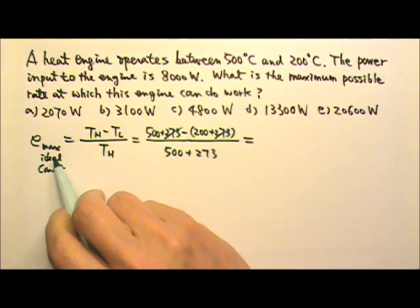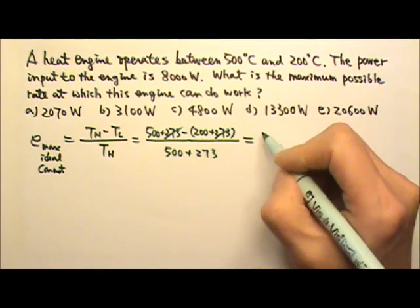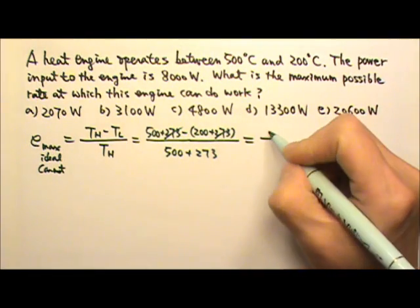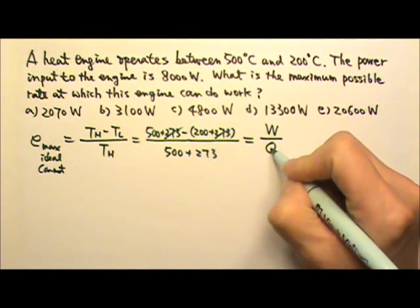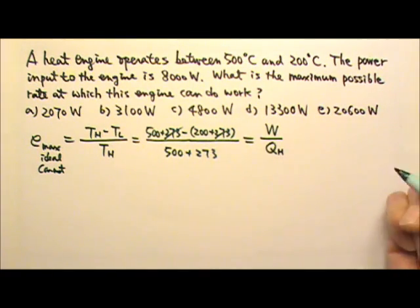And by definition, the efficiency of a heat engine is also the work output divided by the energy input, which means QH.